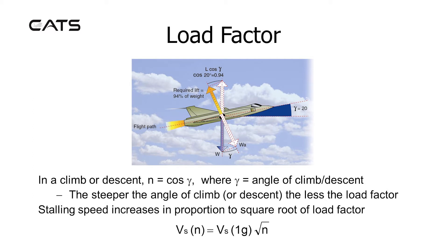Stalling speed increases in proportion to the square root of load factor. The stall speed under the new condition equals the stall speed in the original 1g environment multiplied by the square root of load factor.